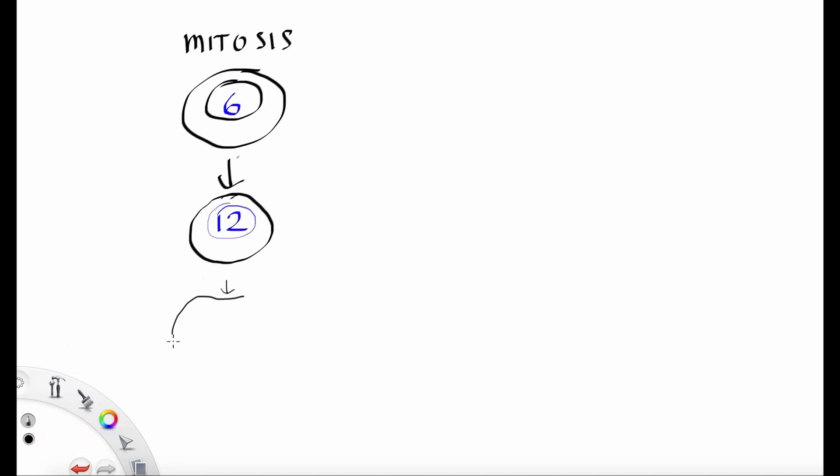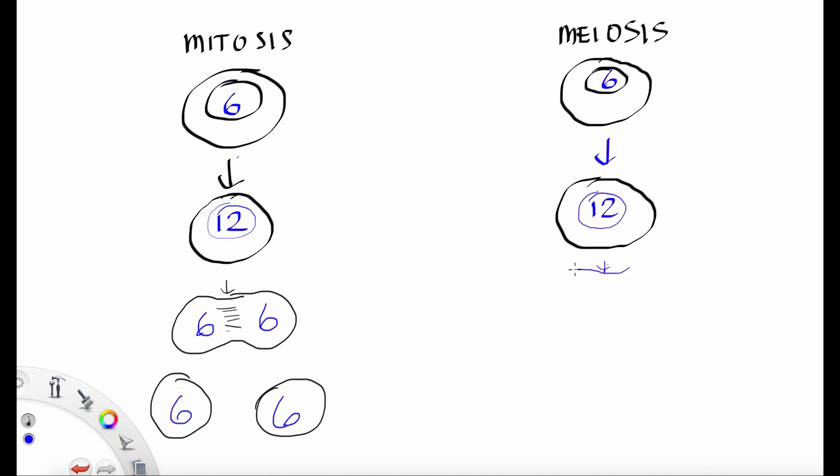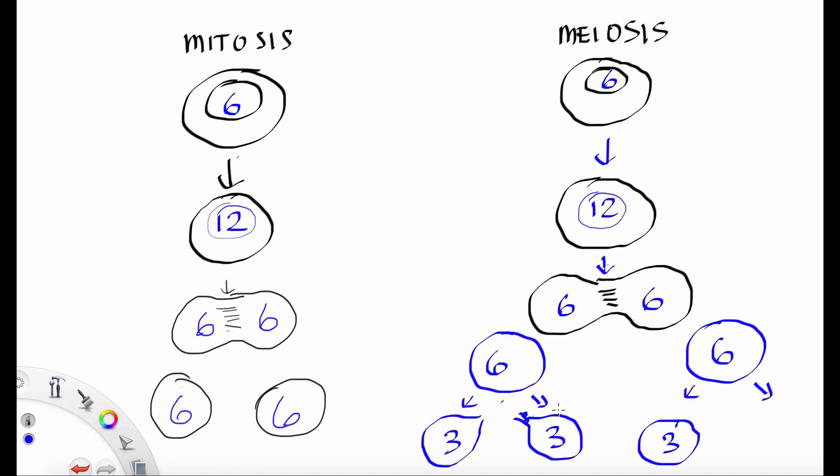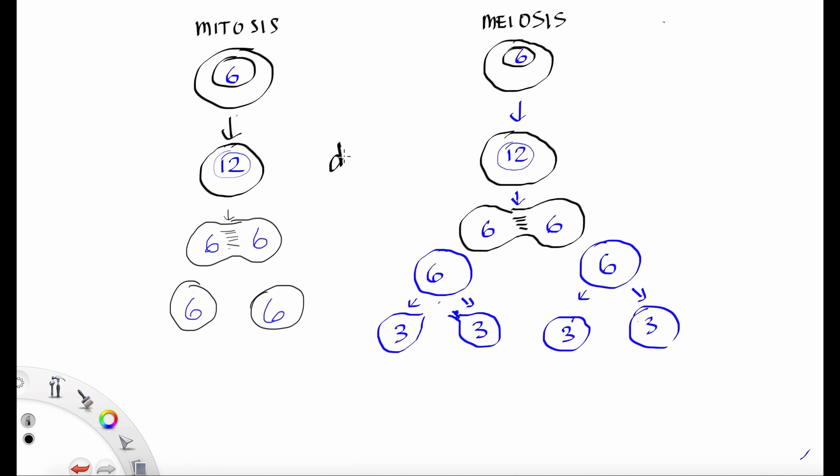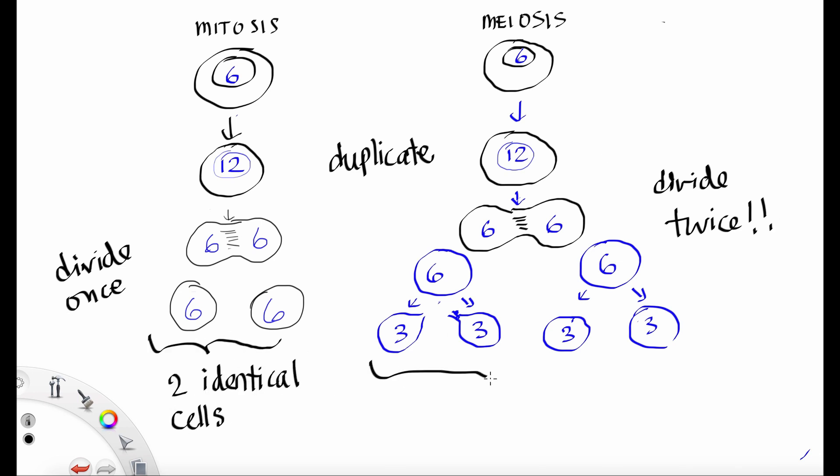For 6 chromatids to double and then divide twice. So if we put mitosis and meiosis side by side, then you can kind of see the difference between them. Both of them will duplicate the genome. And mitosis divides once, but meiosis divides twice. In mitosis you get 2 identical cells, and in meiosis you get 4 haploid gametes.